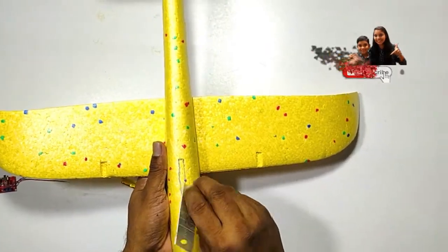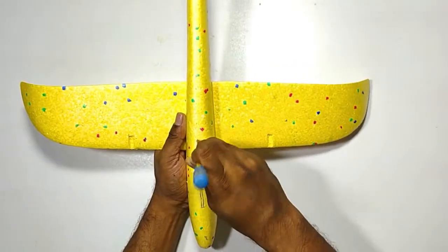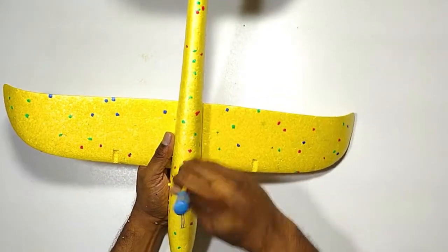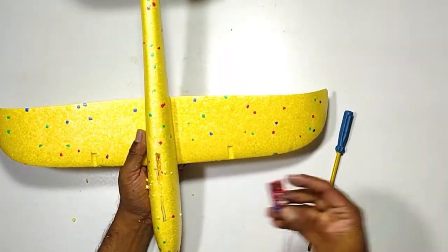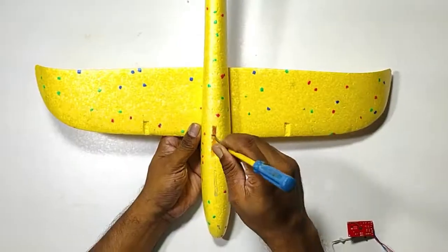So create the slot as if the battery and receiver fit tightly inside the slots. So we have to remove the unwanted material. So the slots will be created.